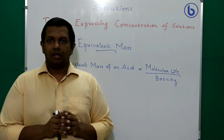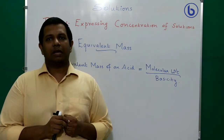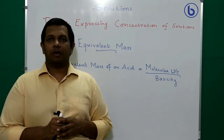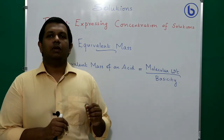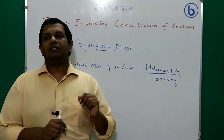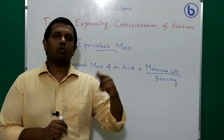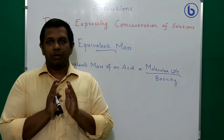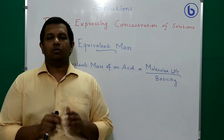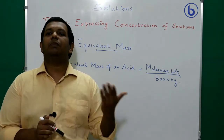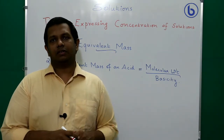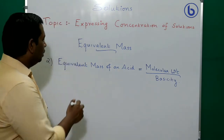One important note: from the chemical formula alone, we can't always determine the number of replaceable hydrogens. You need to understand the structure of the compound to identify exactly how many H⁺ ions the acid can donate, since an acid is a species capable of donating H⁺ ions.